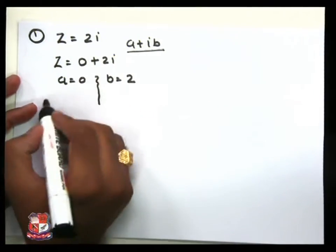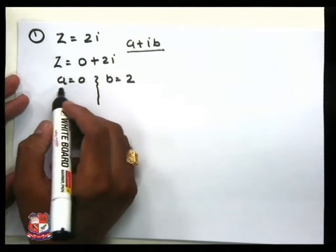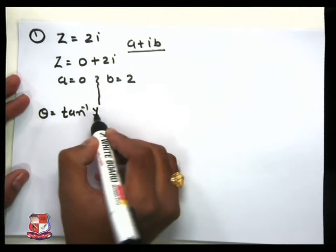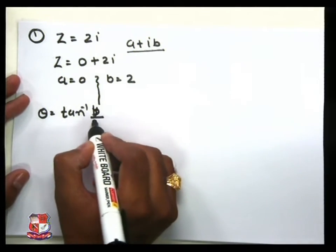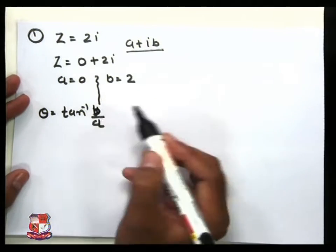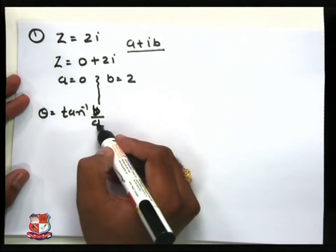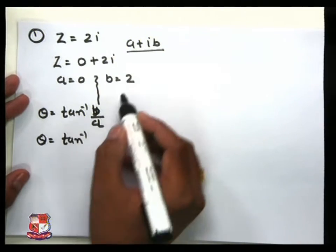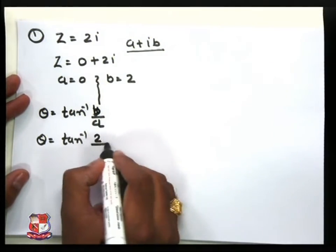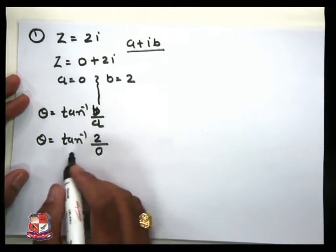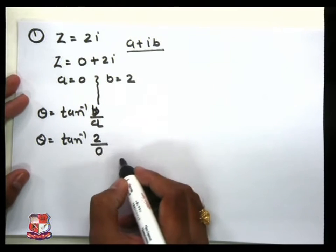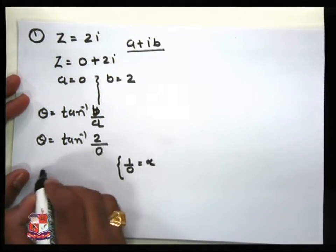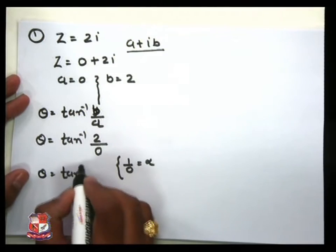Now, using our rule to find the angle of the complex number: θ = tan⁻¹(b/a). Putting b = 2 and a = 0, we get θ = tan⁻¹(2/0). Now, 2 divided by 0 is infinite — any value divided by 0 is infinite. So θ = tan⁻¹(∞). At which angle does tan go to infinity?